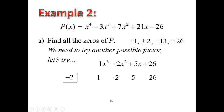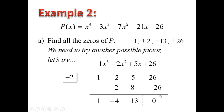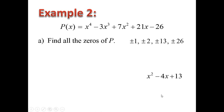The first number we bring down. Then 1 times negative 2 is negative 2. Negative 2 plus negative 2 is negative 4. Negative 4 times negative 2 is positive 8. Then 5 plus 8 is 13. For the final remainder, we want to end up with 0, and we do — so the whole thing is divisible. Rewriting it, the quotient is x squared minus 4x plus 13.